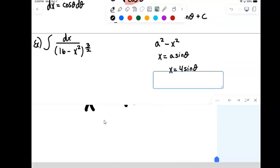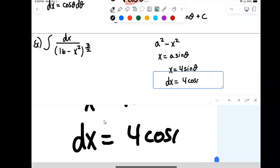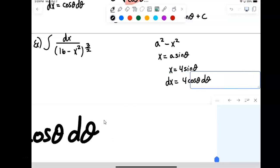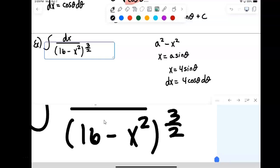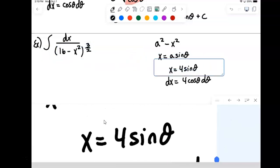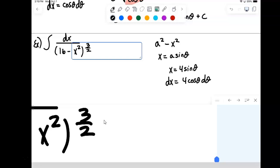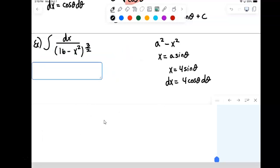And so dx would be the derivative, which would be 4 cosine theta d theta. So let's go ahead and make that adjustment here. And again, what this will eventually transform into because of that Pythagorean relationship, eventually we're going to be bringing a cosine into this problem.